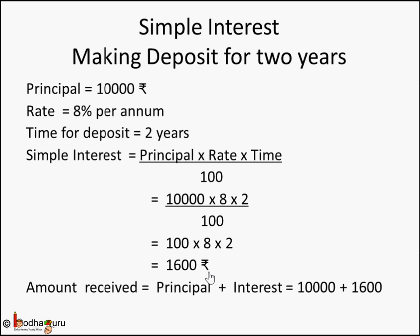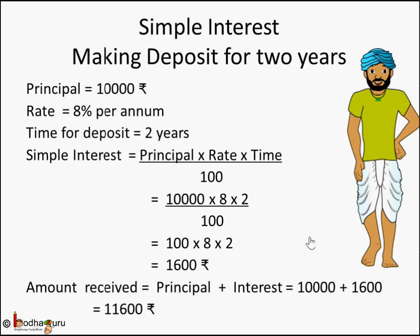Interest is earned every year. So the amount received will be principal plus interest: 10,000 deposited plus 1,600 rupees interest from the bank. After 2 years, Sukram is very happy — he got 11,600 rupees.